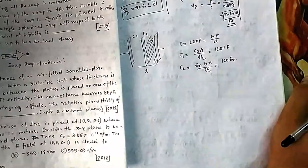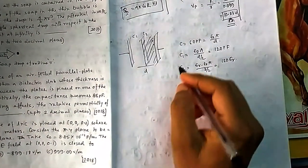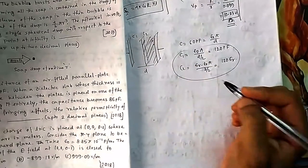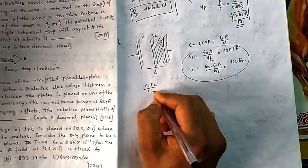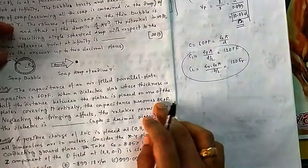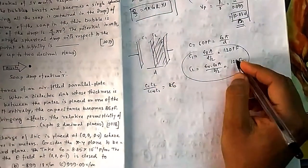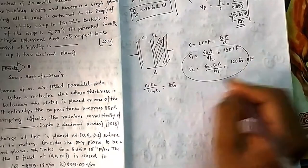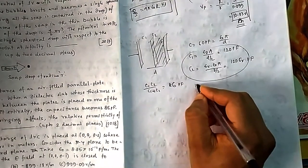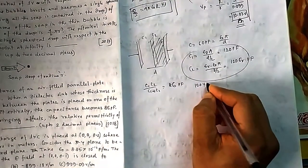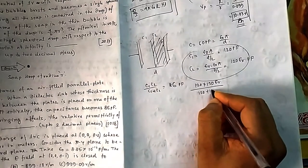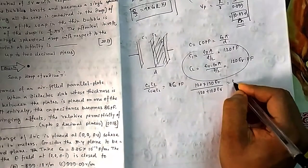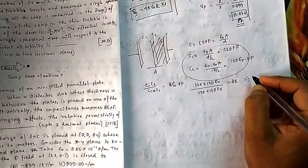Connecting C1 and C2 in series: C_total = C1×C2 / (C1 + C2) = (120 × 120εᵣ) / (120 + 120εᵣ) = 86 picofarads. Solving this equation gives εᵣ = 2.53.